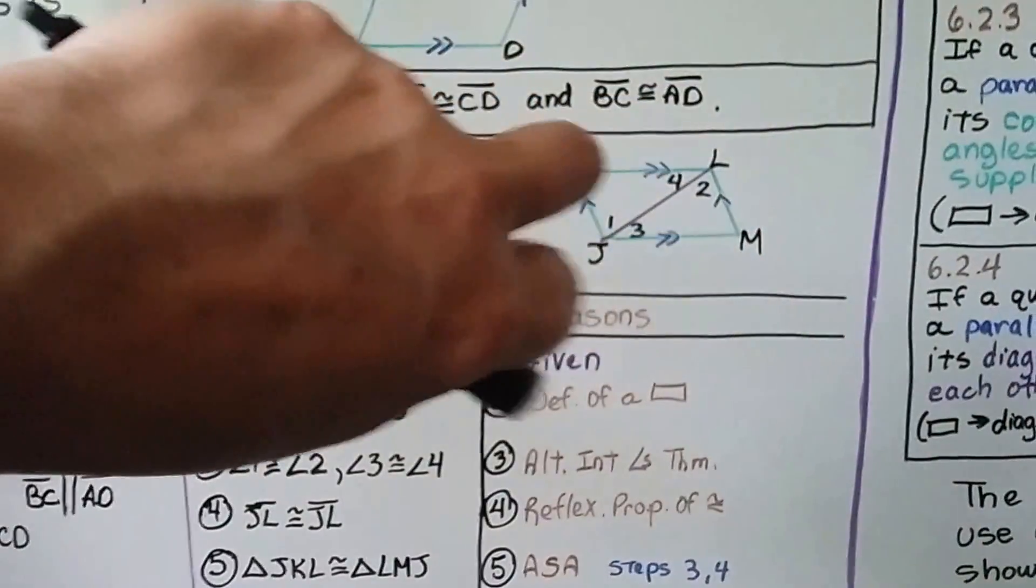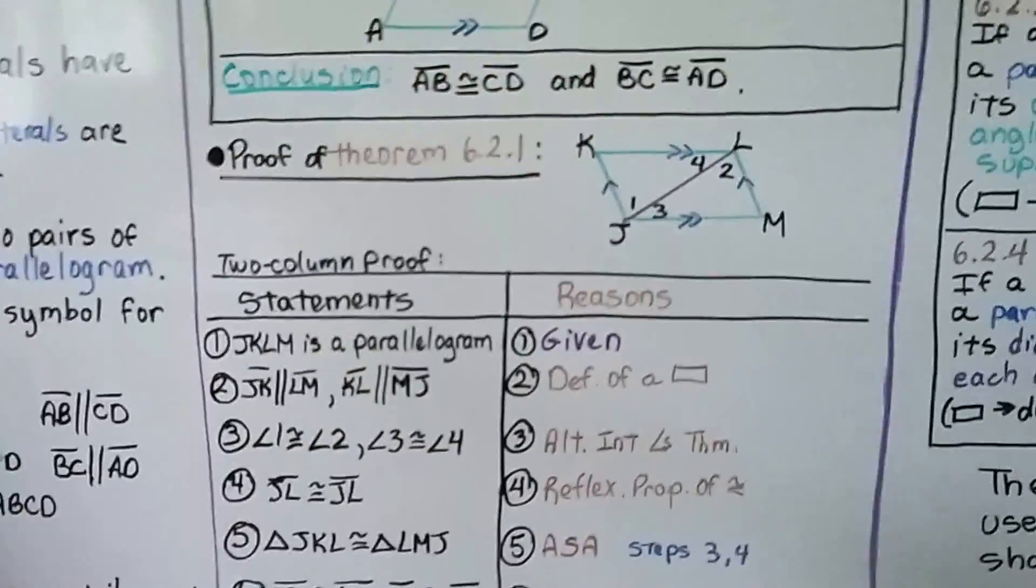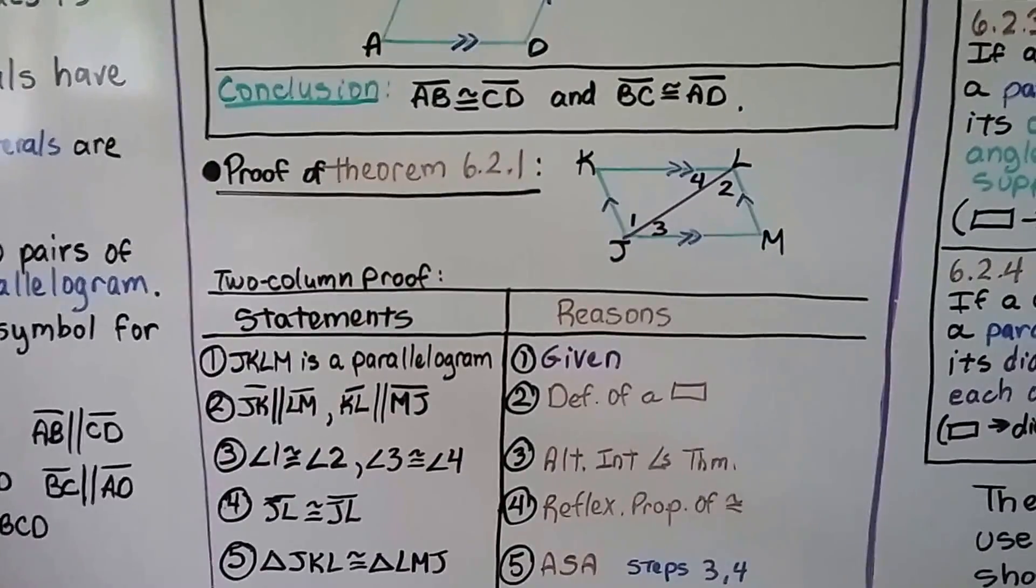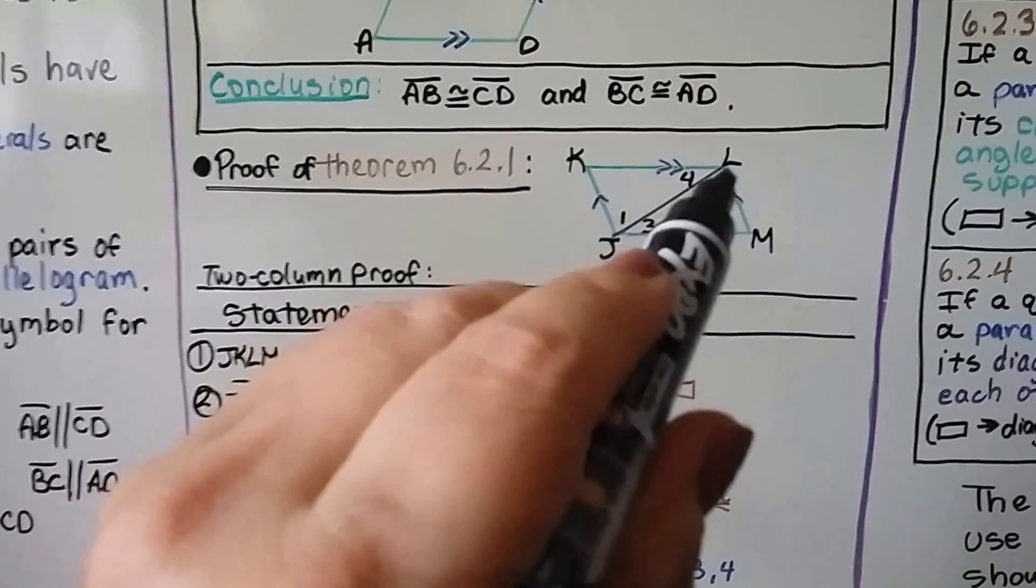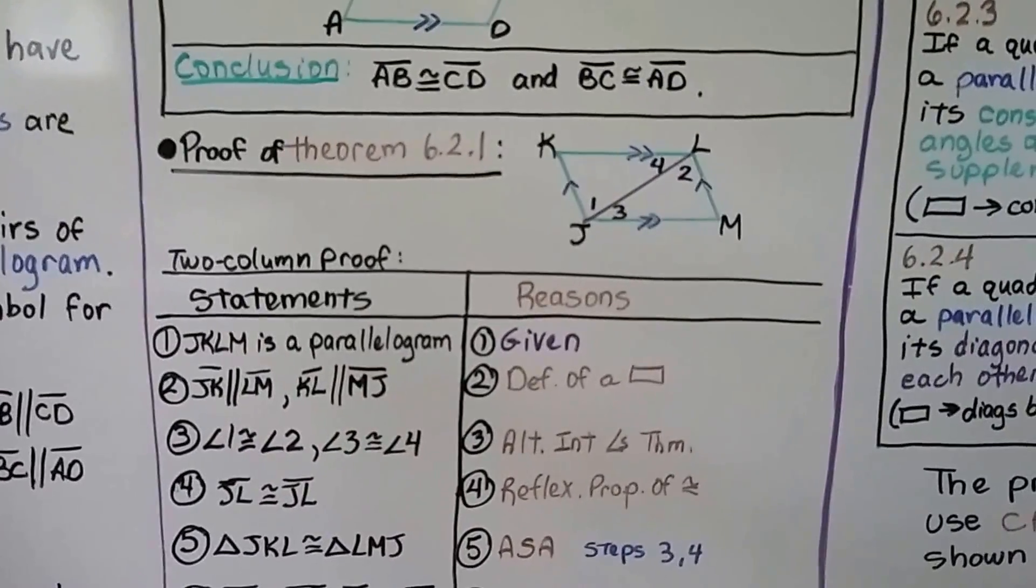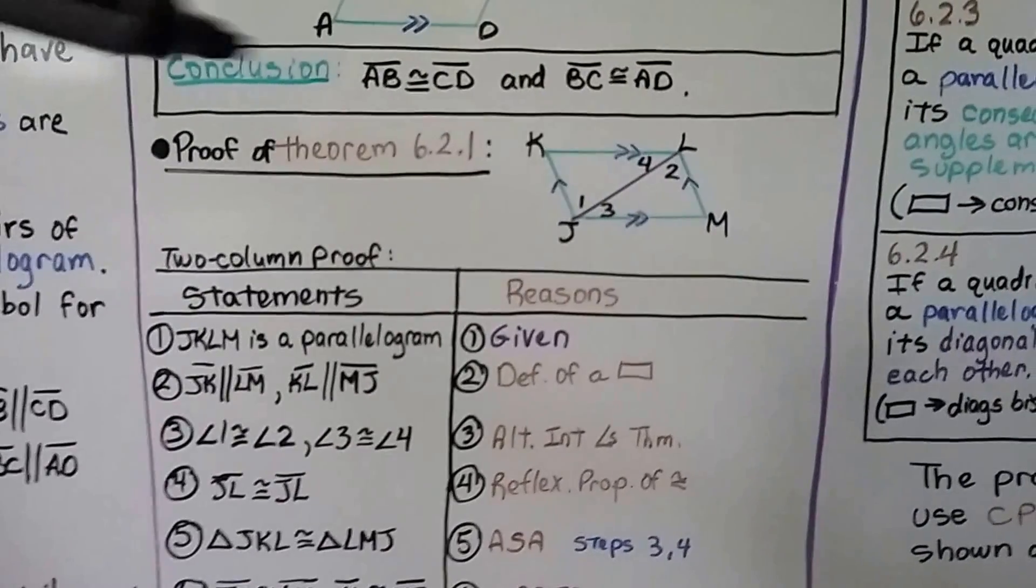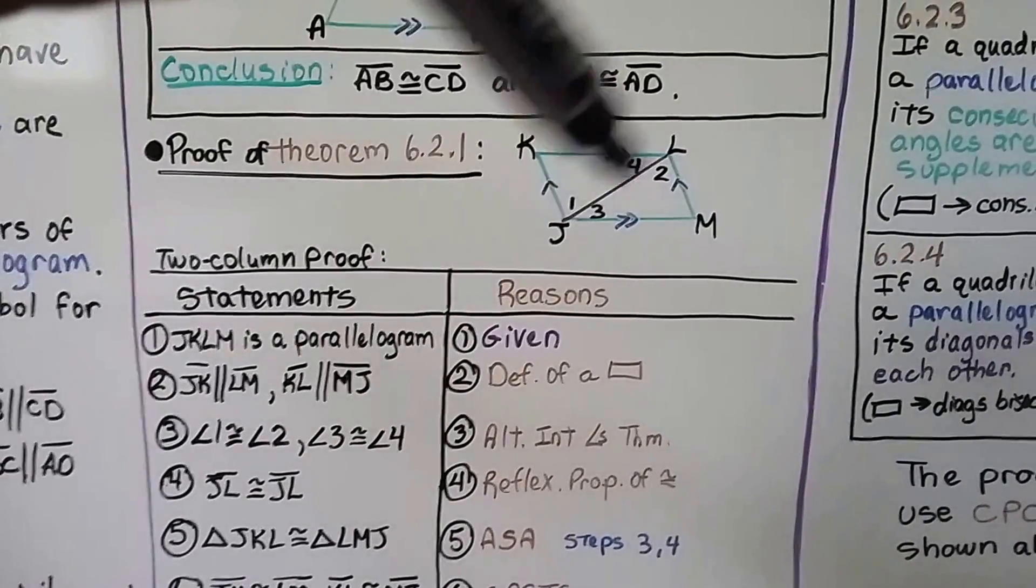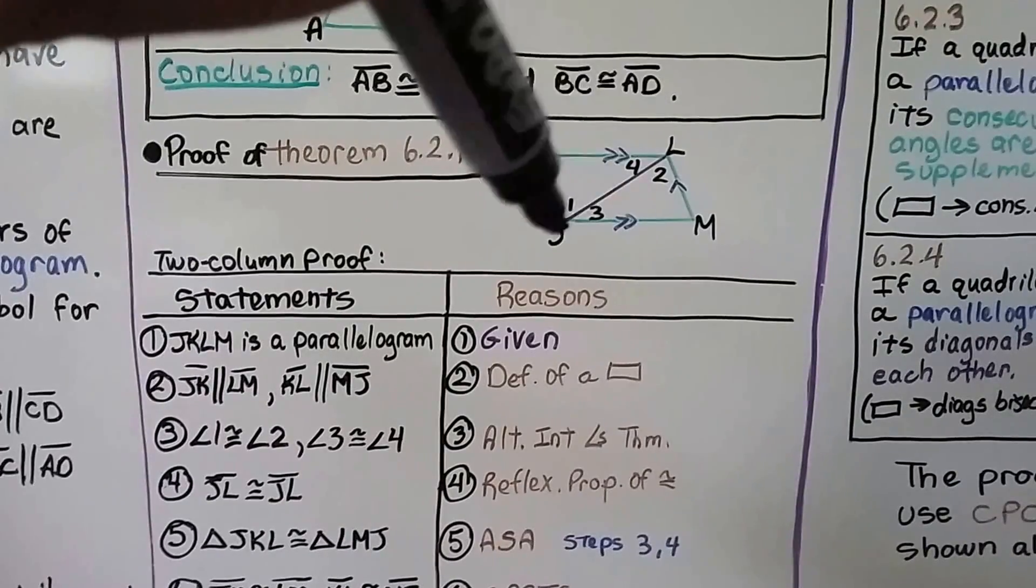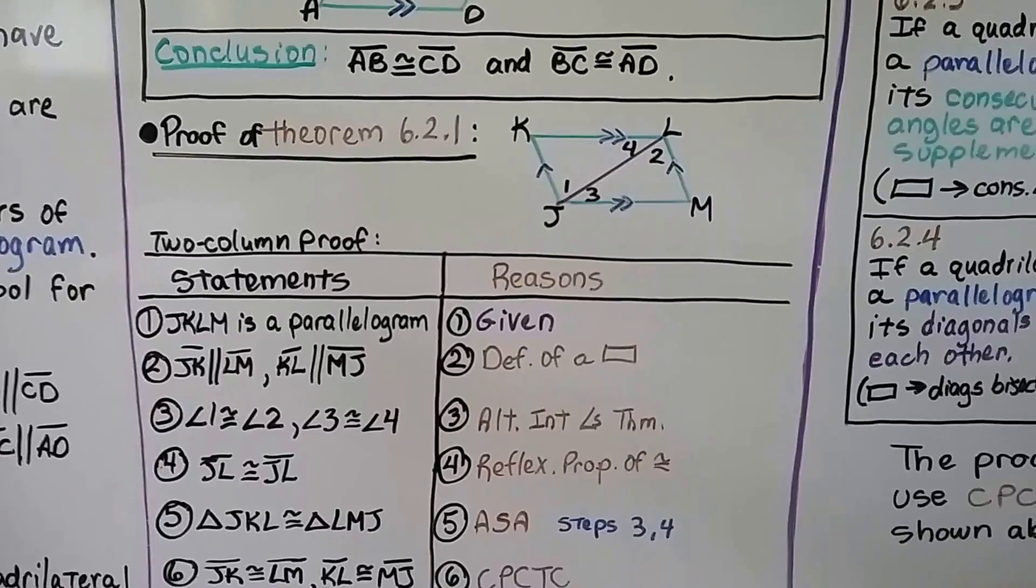If we've got these parallel lines, and this one's going on a diagonal, that's a transversal, isn't it? Which means 1 and 2 are alternate interior angles, and 3 and 4 are alternate interior angles. Number four, we've got segment JL is congruent to segment JL. The hypotenuse for this triangle is congruent to the hypotenuse for this triangle because they share it. And that's the reflexive property of congruence.